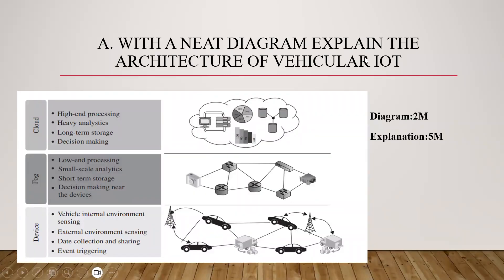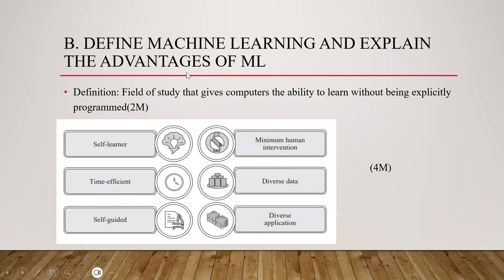For the first question — with a neat diagram, explain the architecture of vehicular IoT — you will be drawing a diagram showing what is device, what is fog, and what is cloud. Each layer denotes device, fog, and cloud. The diagram carries two marks, and explanation of all these layers carries five marks. For device, fog, and cloud, you explain the key points for each. Totally, explanation covers five marks, for a total of seven marks.